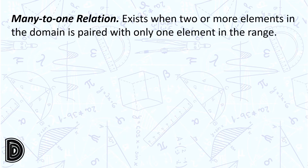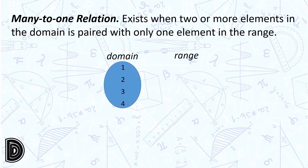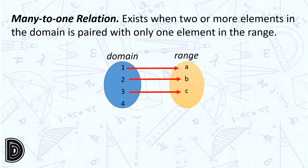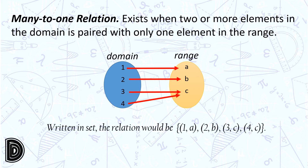Many-to-one relation exists when two or more elements in the domain are paired with only one element in the range. Let's have domain elements 1, 2, 3, and 4, and range elements A, B, and C. 1 is paired to A, 2 to B, 3 is paired to C, and 4 is also paired to C. Written in set notation, this would be (1,A), (2,B), (3,C), (4,C).